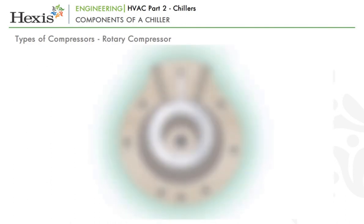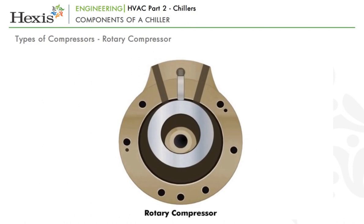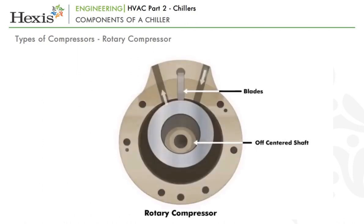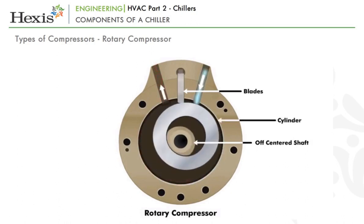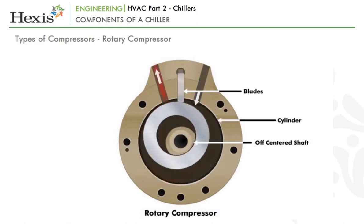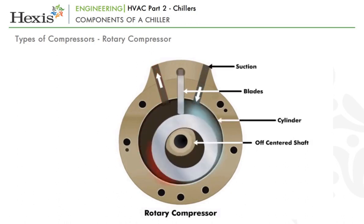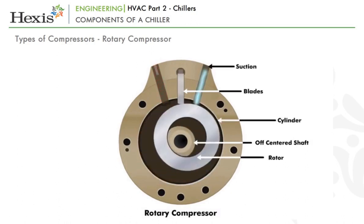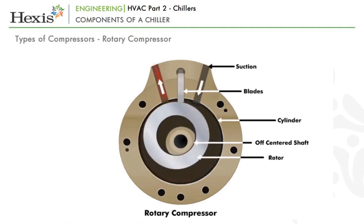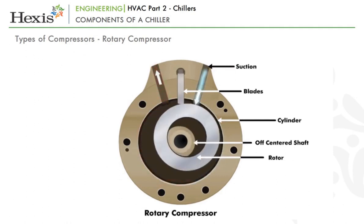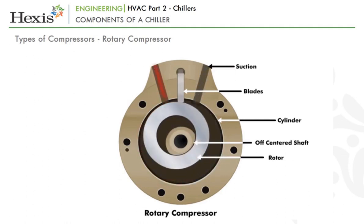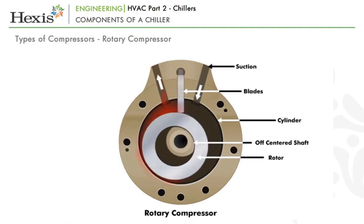The third type is the rotary compressor, which has an off-centered shaft with blades moving at high speed inside a cylinder. Gas is drawn in at the suction end, and as the rotor moves, the trapped gas is compressed by the reducing volume due to the eccentric movement of the shaft.